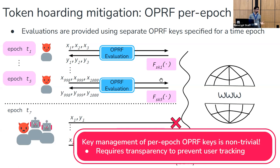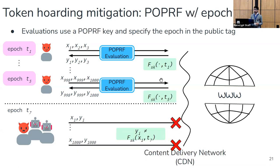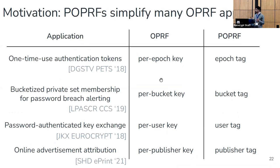This is where POPRFs can come in. We can draw the same picture as before, however instead of using a different OPRF key for each time epoch, the time epoch information can be encoded as a public tag of the POPRF. This way, only a single POPRF key is required. In fact, in almost all of the OPRF applications we looked at, the same pattern of having many OPRF keys emerges, and in all these cases we show that a POPRF can be slotted in to simplify deployment.